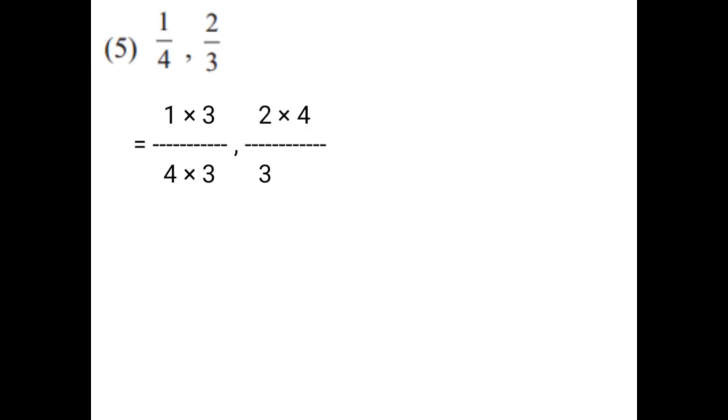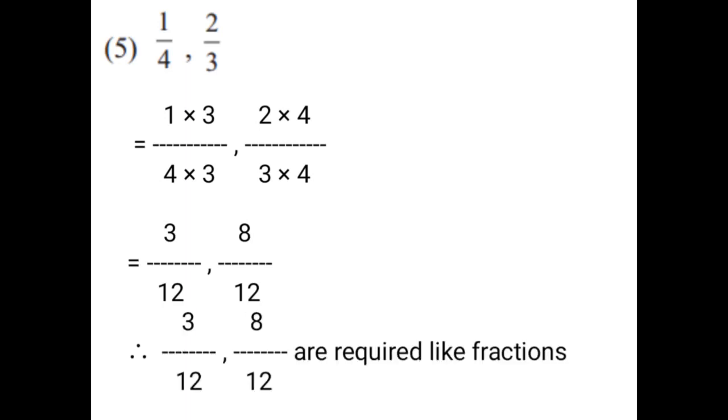1 upon 4, 2 upon 3. You have to take opposite denominators to multiply on numerator and denominator of both the fractions. That is equal to 1 upon 4 multiplied by 3 on numerator and 3 on denominator. 2 upon 3 multiplied by 4 on numerator and 4 on denominator. That is equal to 1 × 3 = 3 upon 4 × 3 = 12. And 2 × 4 = 8 upon 3 × 4 = 12. Therefore, 3 upon 12 and 8 upon 12 are the required like fractions.